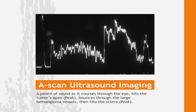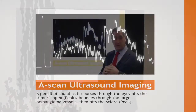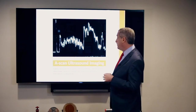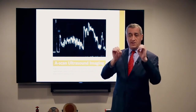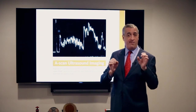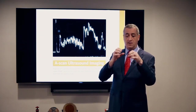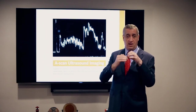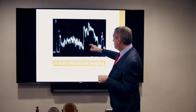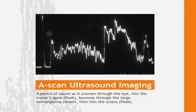On the A-scan — a pencil of sound going through the tumor — the sound goes through the vitreous, hits the tumor with high reflectivity, then the sclera before going into the orbit. Remember the melanoma was low-reflective and the metastatic lesion was variably reflected because of fibrous elements from breast and lung. The hemangioma has very high internal reflectivity because it's a blood vessel tumor with very formed blood vessels, creating lots of echogenic spaces. Each time the sound hits one of those differences, it reflects more back and causes a higher spike.